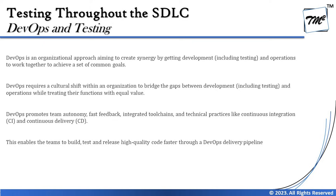In real-time DevOps, every time a new code is checked in or a new piece of code is merged with the existing application, it triggers an automated test which helps check the build verification and regression as well. Automation test scripts can be written and integrated as part of automated confirmations for all the tests needed.